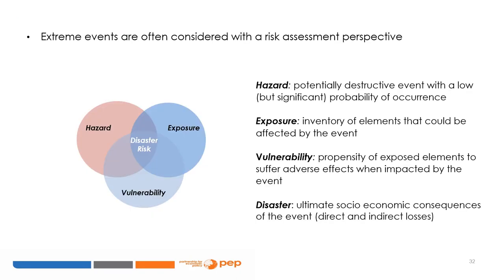In economic literature, extreme events are often looked at with a risk assessment perspective, where disaster risk is a combination of three components. Hazard refers to a potentially destructive extreme event with a low but significant probability of occurrence. Exposure refers to the inventory of elements in an area that could be affected by a hazard event. Vulnerability refers to the propensity of exposed elements to suffer adverse effects when impacted by hazard events. Finally, the disaster effects of an extreme event refer to its ultimate socio-economic consequences, which depend strongly on the levels of vulnerability and exposure of the country and include direct and indirect losses.